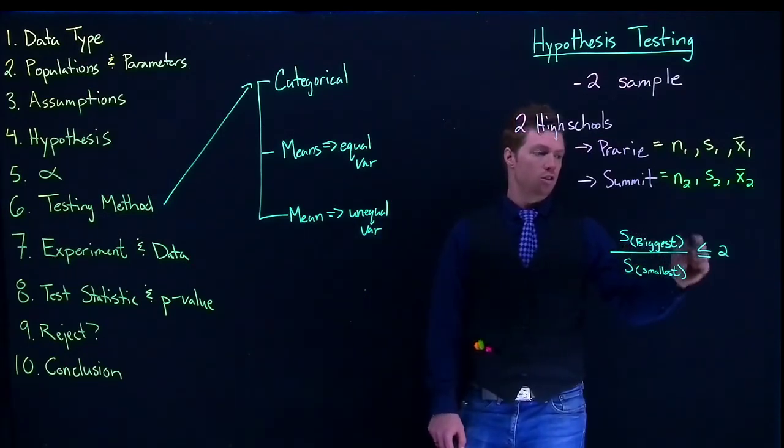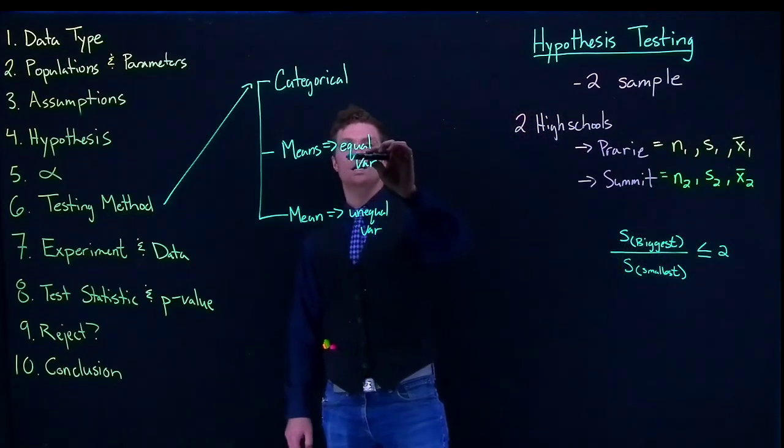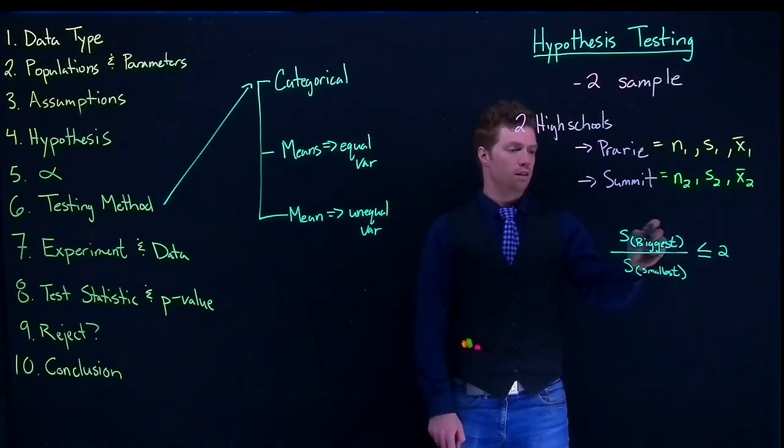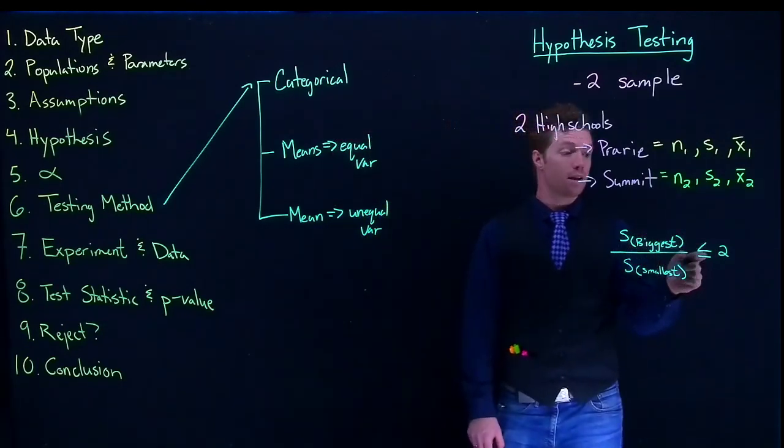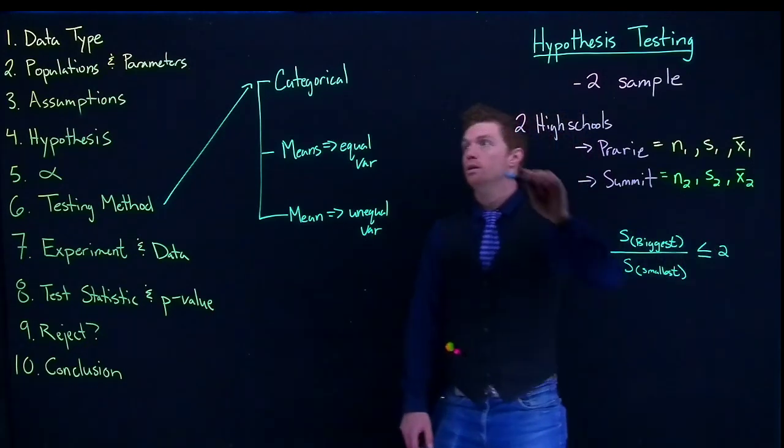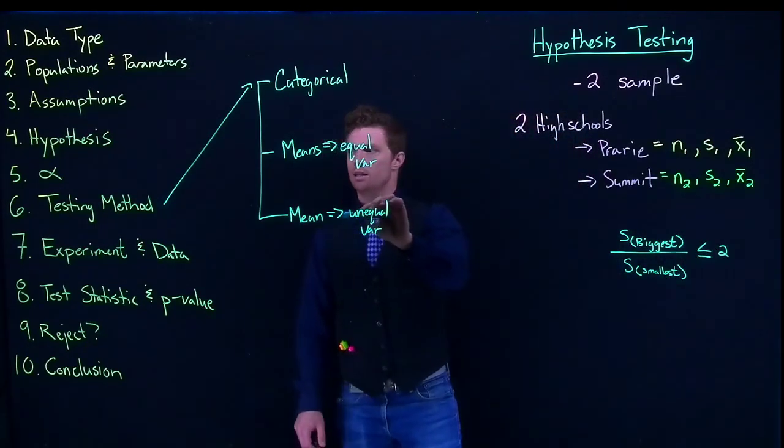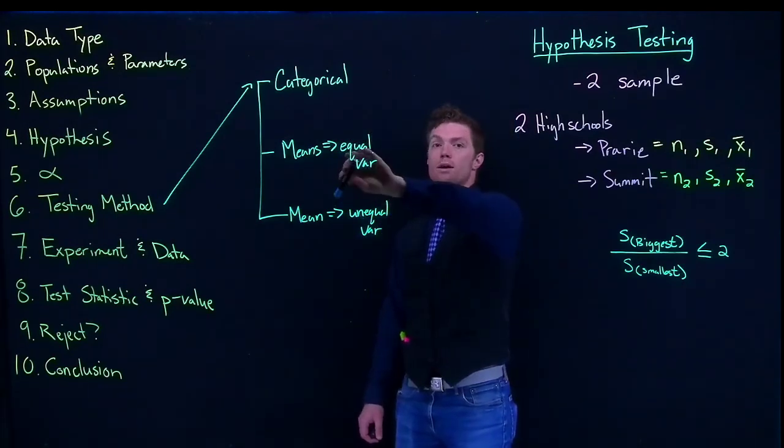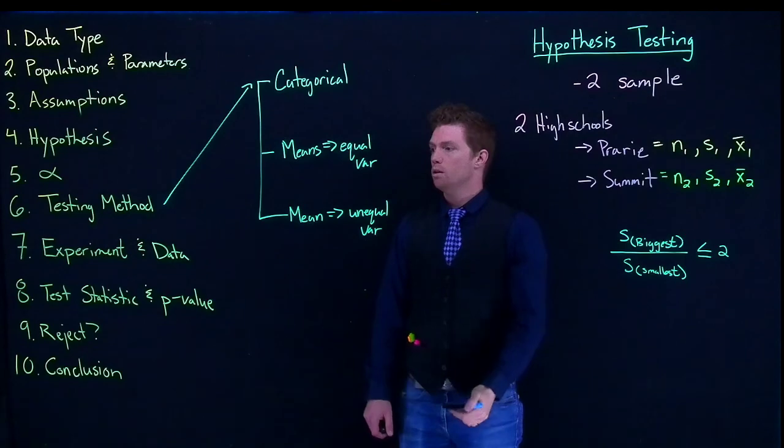So if this is true, we're going to use equal variances. If this is not true, or if this guy is greater than two, then we use the unequal variance. And that's basically the only check that you have to do to figure out which testing method you use for the means.